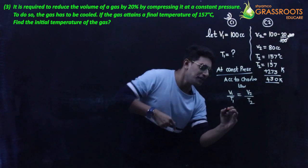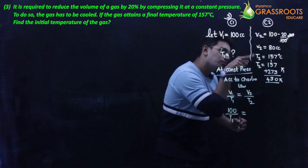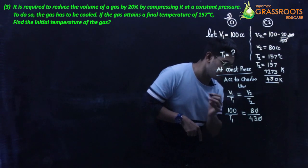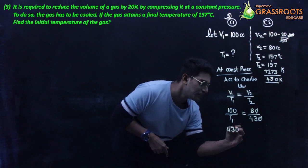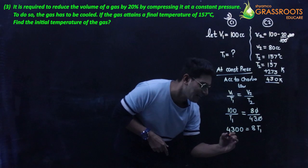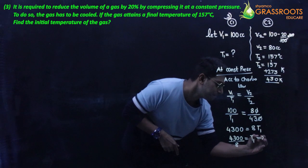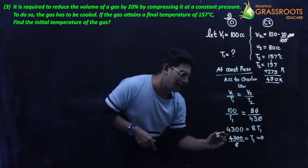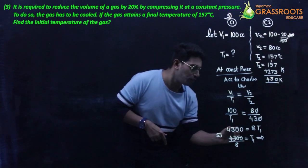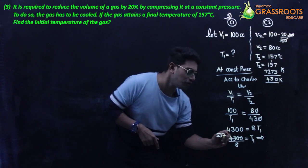Substituting: 100/T1 = 80/430. Cross-multiplying: 4300 = 8 × T1. Therefore T1 = 4300/8 = 537.5 Kelvin.